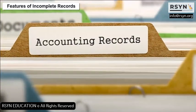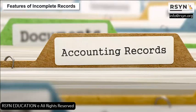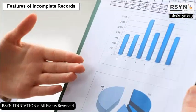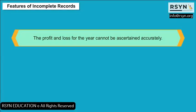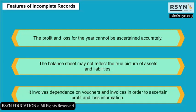Firms maintain records as per their convenience, hence there is no uniformity and the information is not comparable. The profit and loss for the year cannot be ascertained accurately. The balance sheet may not reflect the true picture of assets and liabilities. It involves dependence on vouchers and invoices in order to ascertain profit and loss information.